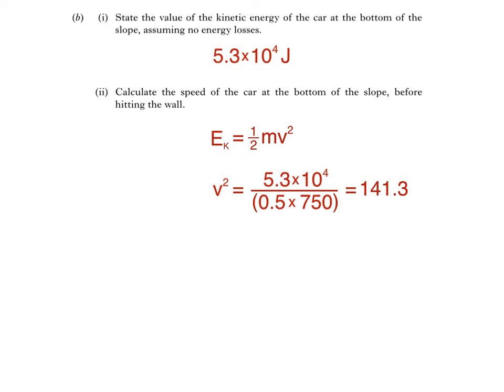So, speed v must be the square root of 141.3, which is 11.8869 meters per second. The last step is to write this answer to the suitable number of significant figures. That gives us a final answer of 12 meters per second.